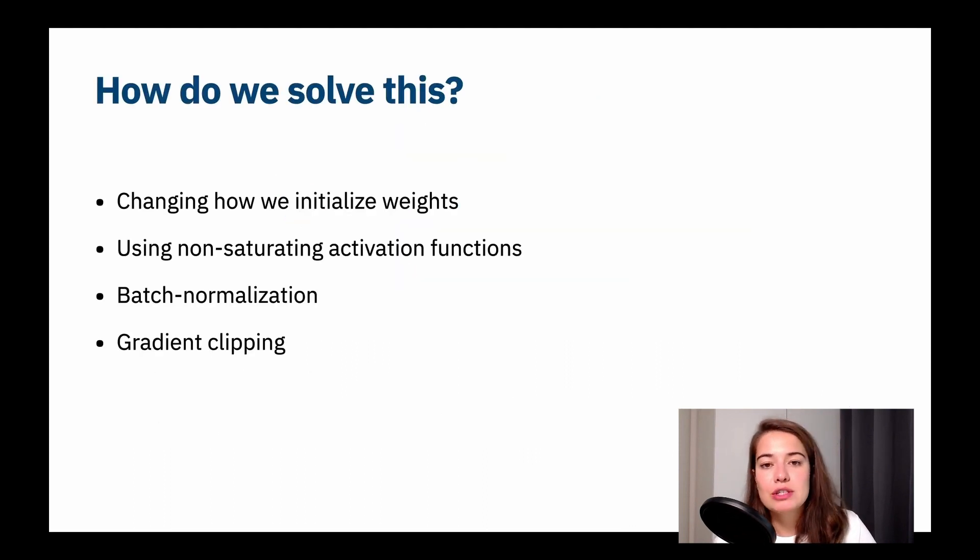So, how do we solve this problem? How do we tackle this problem? So there are a bunch of approaches, and we're going to talk about all of them. So the first one is changing how we initialize the weights. The second one is using a non-saturating activation function. Then we have batch normalization. And lastly, we have gradient clipping.